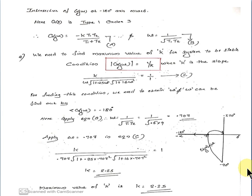Therefore K equals 2.25, and G(jω) is tangent to minus 1 by K at this maximum value. The condition 0 less than K less than 2.25 is the range for the system to be stable.